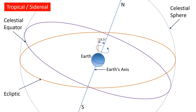Earth's equator is extended in all directions so that it becomes the equator of the celestial sphere, and Earth's poles are extended north and south so they become the celestial poles. The celestial equator crosses the ecliptic at an angle of about 23.5 degrees, as the Earth is tilted along its axis by the same amount. The celestial equator intersects the ecliptic twice every year. Since the Sun is in the same plane as the ecliptic, this is the same as saying that the celestial equator passes through the center of the Sun twice each year, around the 20th of March and the 23rd of September.